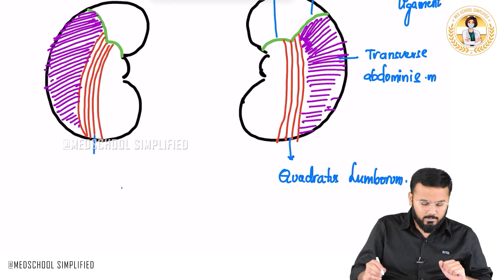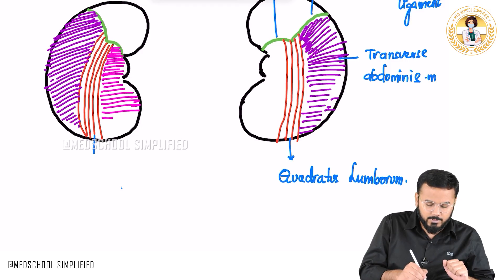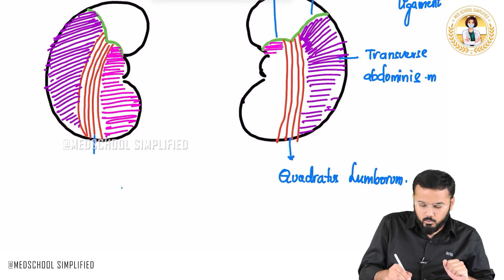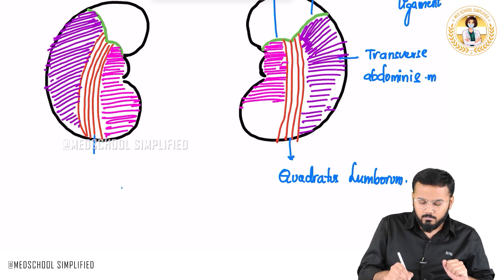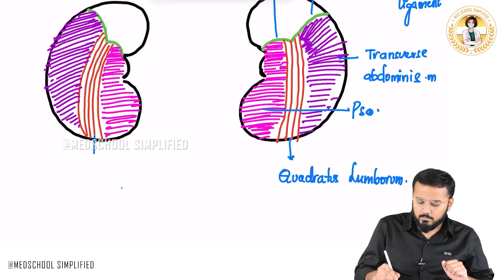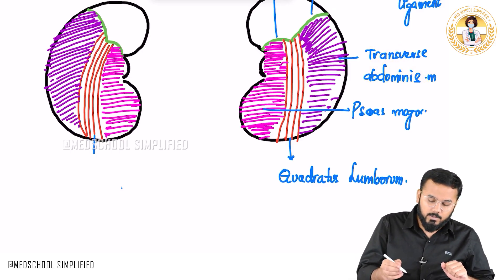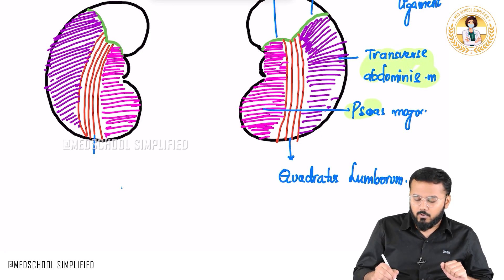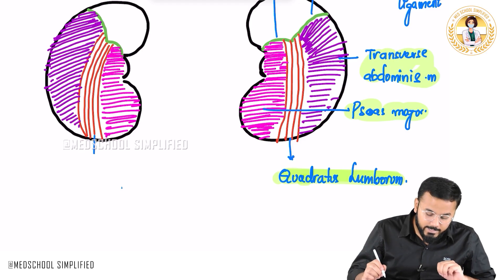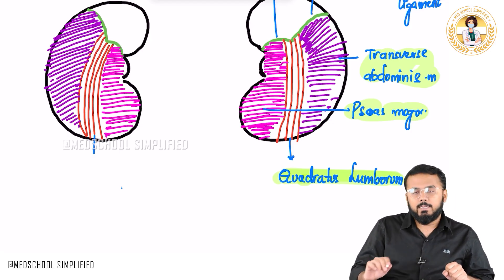After that, there is a third muscle located medially called the psoas major muscle. So we have got three important muscles in posterior relation with the kidneys: transverse abdominis, psoas major, and quadratus lumborum. For both the right and left kidney, these relations are the same.